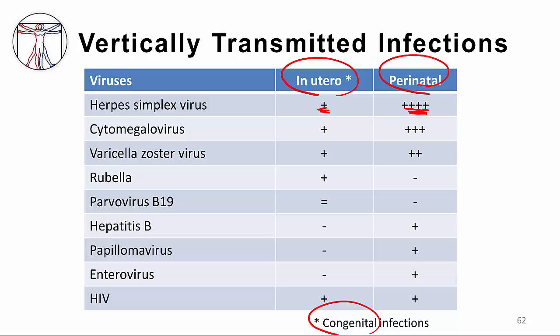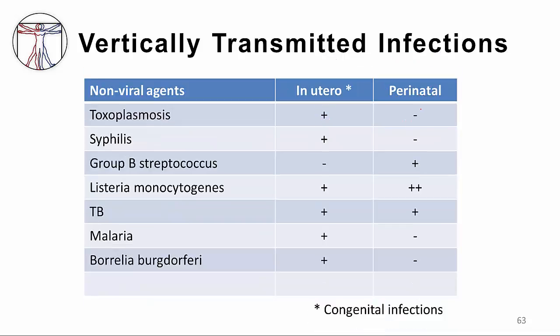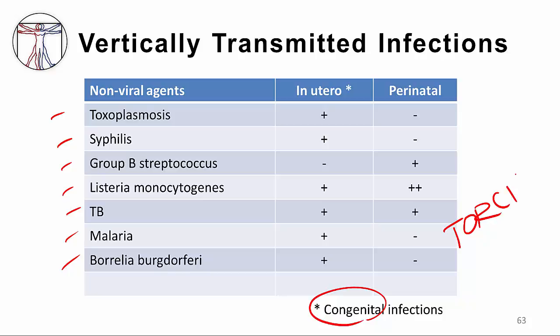In addition to viruses that may be transmitted vertically, there are non-viral agents that may also be transmitted vertically: toxoplasmosis, syphilis, group B streptococcus and listeria, tuberculosis, malaria, and even the cause of Lyme disease. Some have referred to these, especially congenital infections, as the TORCH infections, where TORCH stands for toxoplasmosis, O for other (where you can place everything else), R for rubella, C for cytomegalovirus, and H for herpes. Some call it STORCH — carried in by the storch — where S stands for syphilis.